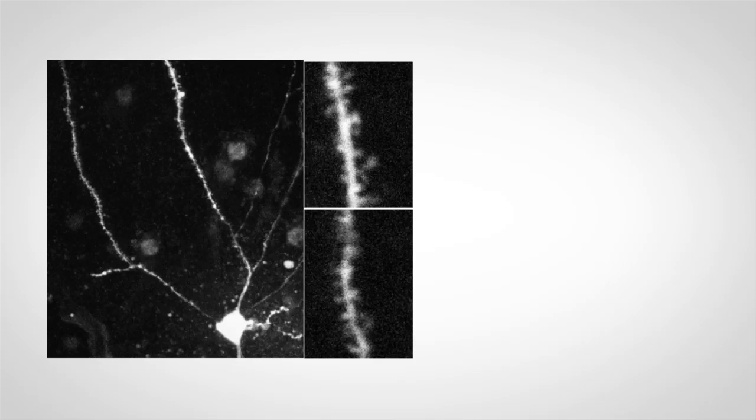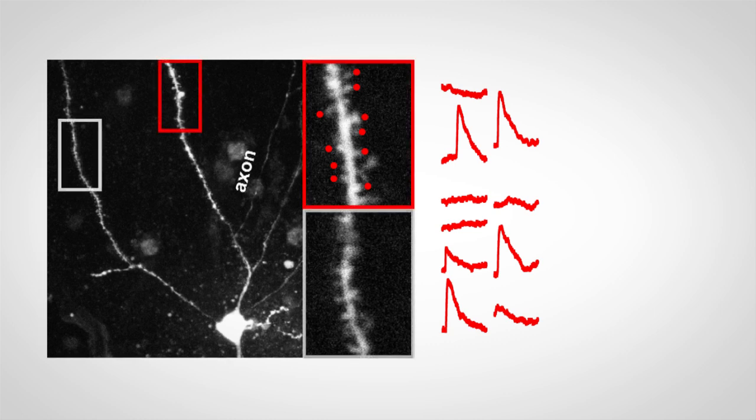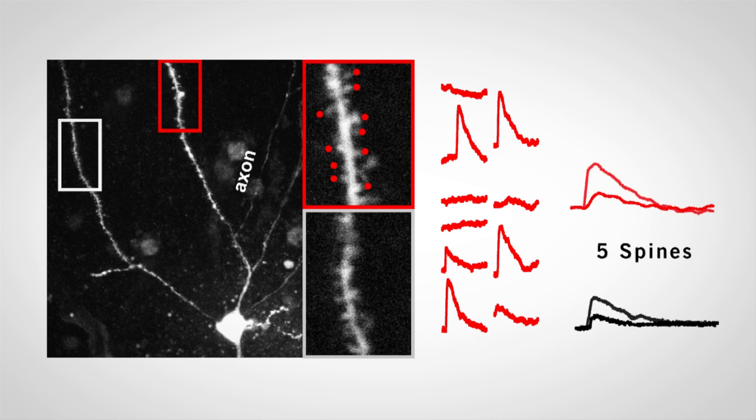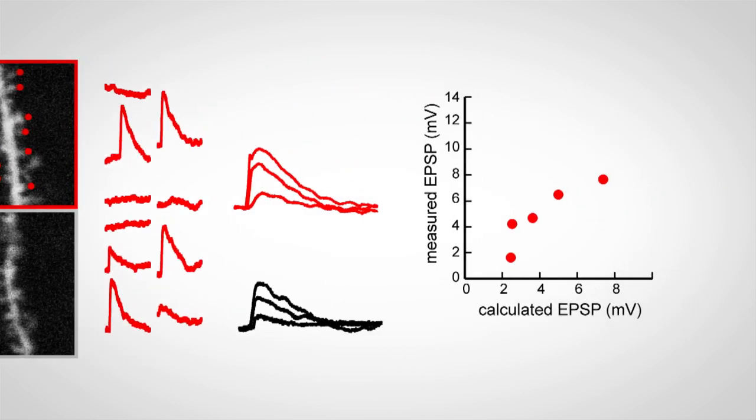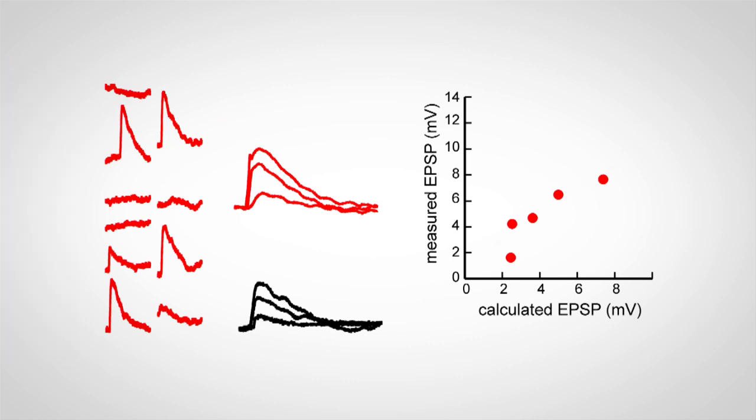Using multi-photon glutamate uncaging, we can stimulate individual synapses from identified dendrites with and without a connected axon. We can also stimulate multiple synapses together and compare this measured compound EPSP with the EPSPs calculated by simply adding up the individual responses. In both types of dendrites, increasing the number of activated synapses increased EPSP and at least initially this was linear.